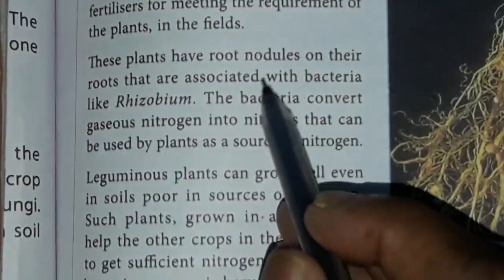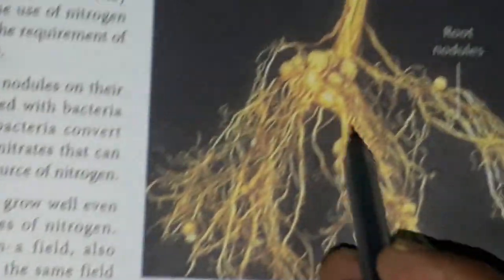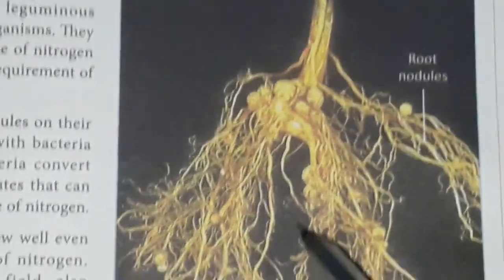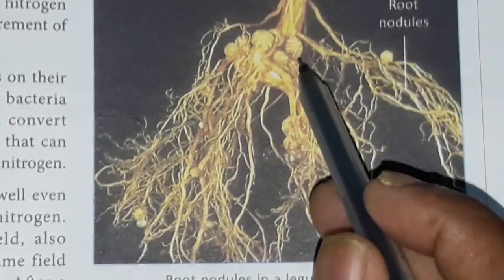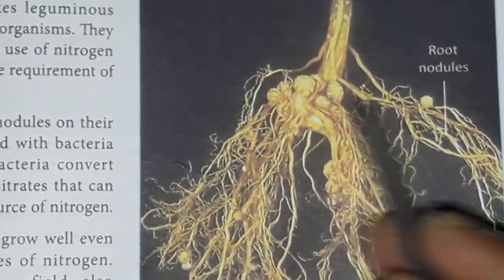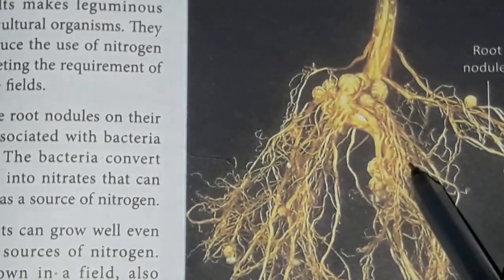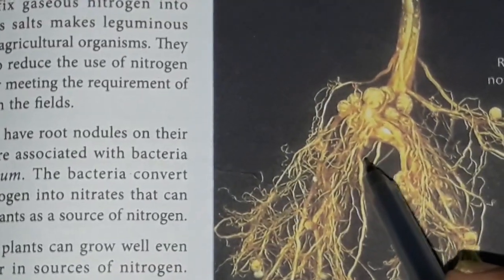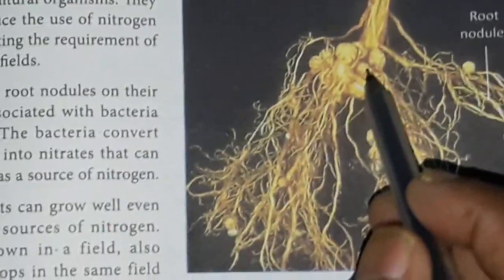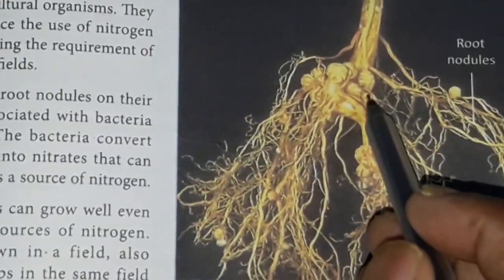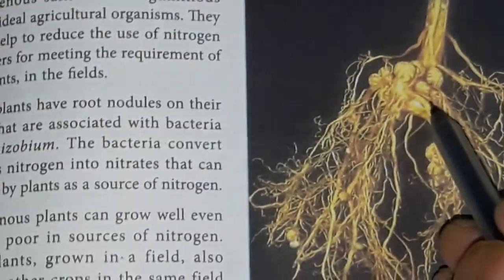These plants have root nodules on their roots. As shown here, root nodules are found in leguminous plants. These root nodules are associated with a special bacteria called rhizobium.